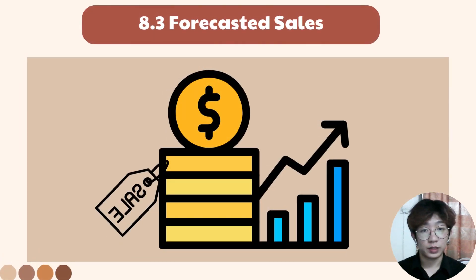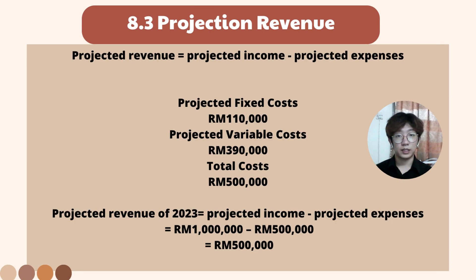For our forecasted sales, we expect revenue to increase year by year, from RM1,000,000 in 2023 to RM2,000,000 in 2027. Projected revenue means projected income minus projected expenses. The projected fixed cost is RM110,000, while the projected variable cost is RM390,000, giving a total cost of RM500,000. To calculate the projected revenue for 2023, we use the projected income of RM1,000,000 minus projected expenses of RM500,000, resulting in projected revenue of RM500,000 for 2023.